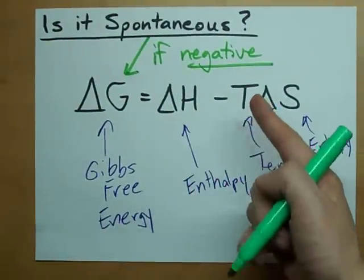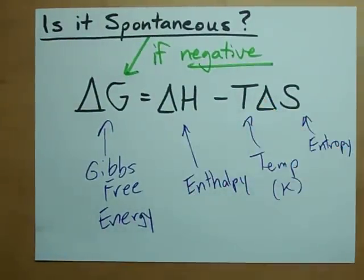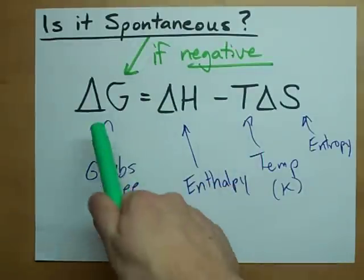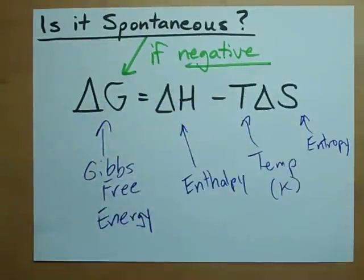If they give you delta H, and the temperature, and the delta S, plug it into your equation. If this is negative, boom! Spontaneous.